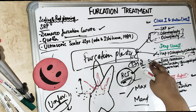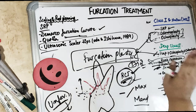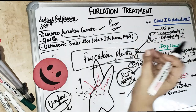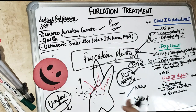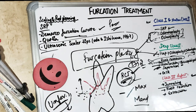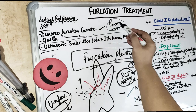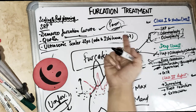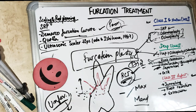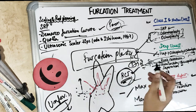Root resection is contraindicated when the patient has poor oral hygiene — in perio, it is very important for the patient to maintain good oral hygiene, otherwise any treatment is futile. It is also contraindicated when there is a fused root, such as in third molars, because it is difficult to remove just one root.